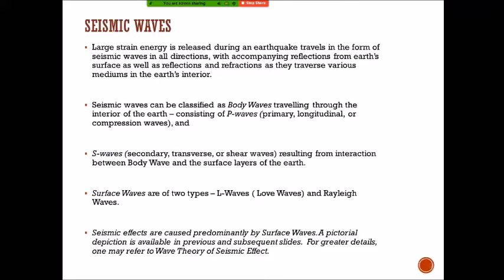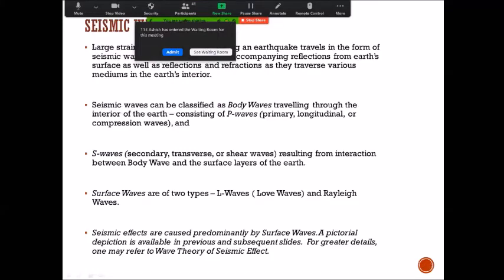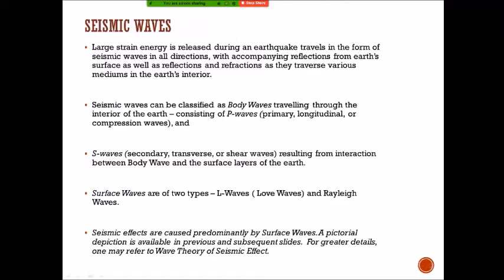Large strain energy is released during an earthquake, with reflections and refractions taking place. The type of waves that hit the earth and its surface include body waves, also called P waves or primary longitudinal or compression waves. This wave moves radially from the point of origin in straight lines. It is a huge compression — and this causes vertical vibration in structures when it hits any structure at the surface.